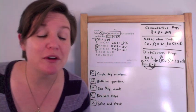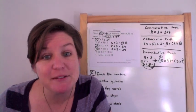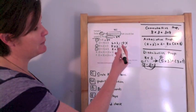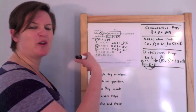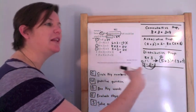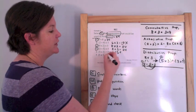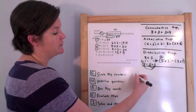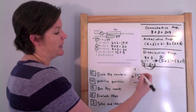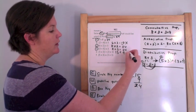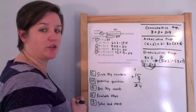Now we have two sets of parentheses. Which one do I do first for E? It doesn't matter, but I'll go from left to right. 5 times 3 equals 15, plus 9 — 15 plus 9 equals 24. This one is equal to 24, so that's correct.